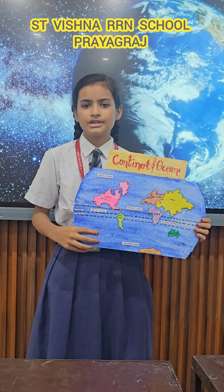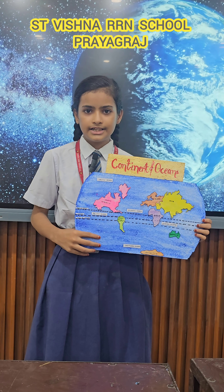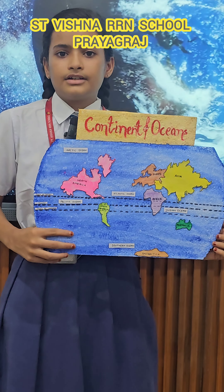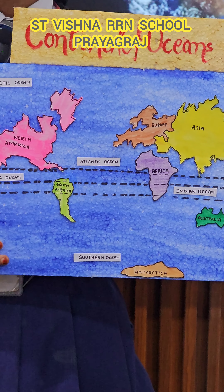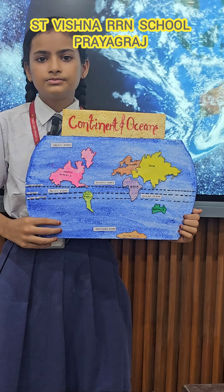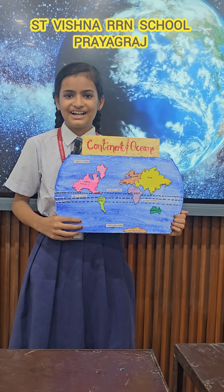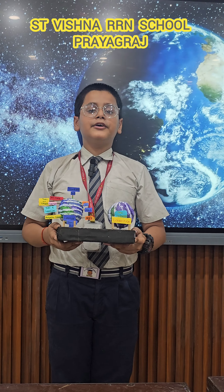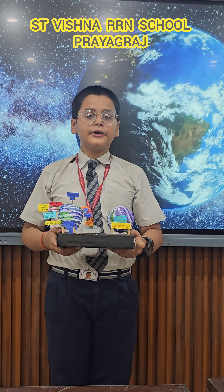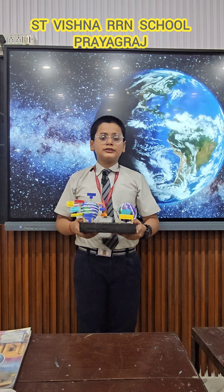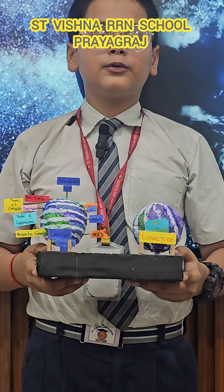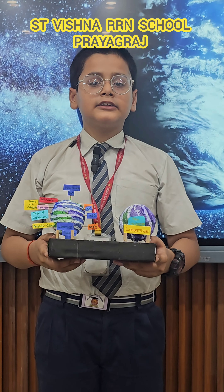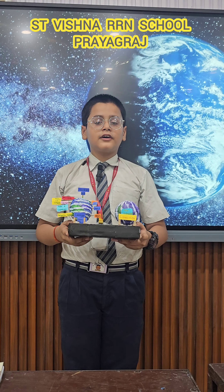Good morning everyone. My name is Rana Fatima, class 5th B, and I am giving a presentation on social studies. There are seven continents: Asia, Europe, North America, South America, Antarctica. The imaginary line that runs from east to west parallel to the equator is called latitude. The imaginary line that runs from the North Pole to the South Pole is called longitude.